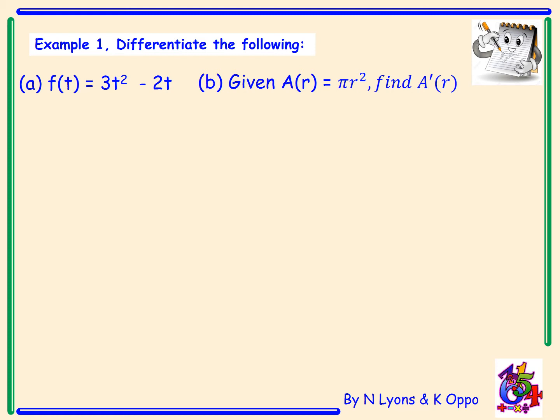Example 1 - Differentiate the following. For part a, we have f(t) = 3t² − 2t. Exactly like differentiating with respect to x, we bring the power down. So 2 multiplied by 3 gives us 6t to the power of 1, and 2t differentiates to 2. The final answer is 6t − 2.